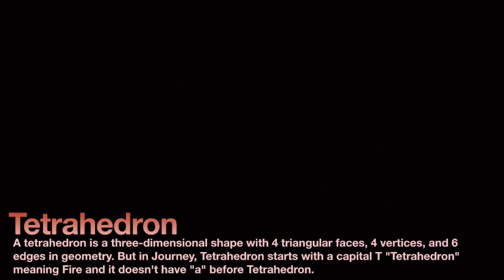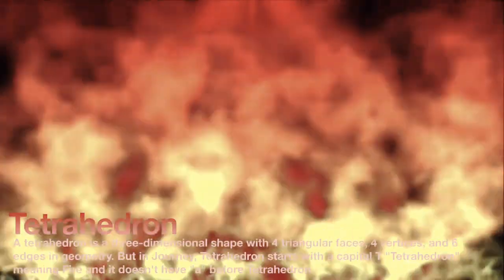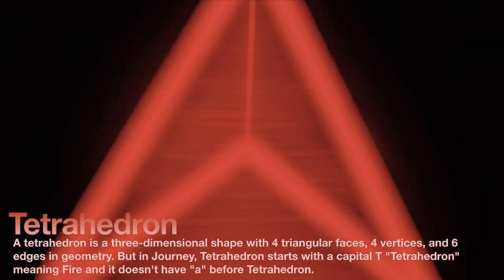A tetrahedron is a three-dimensional shape with four triangular faces, four vertices, and six edges in geometry. But in Journey, Tetrahedron starts with a capital T, meaning fire, and it doesn't have 'A' before tetrahedron.